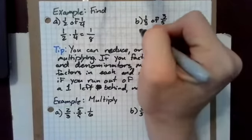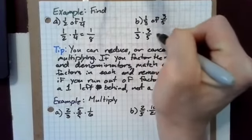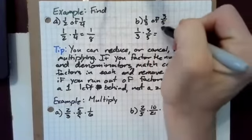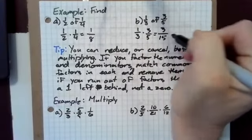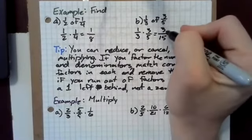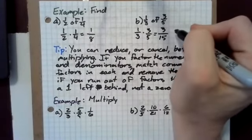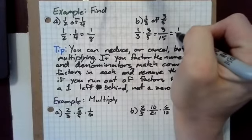Likewise, we've got one third of three fifths. One third times three fifths is one times three is three, over three times five is 15. We're going to simplify this because three is a factor of both three and 15. So this is one fifth.